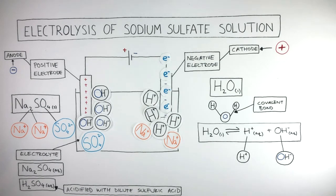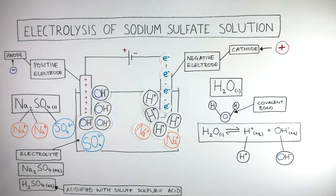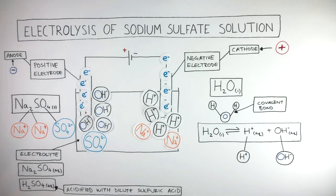Remember, different ions form more easily at the electrodes when they are the same charge. When it comes to anions, halide anions discharge the most readily. After the halide anions then comes hydroxide anions, and after hydroxide anions are then all other anions. Therefore the hydroxide anions will discharge at the anode compared to the sulfate anion. At the anode, the positive electrode, each hydroxide anion loses one electron.